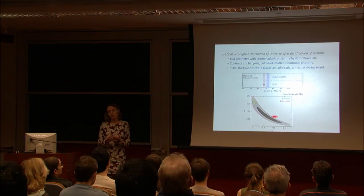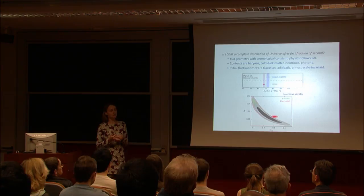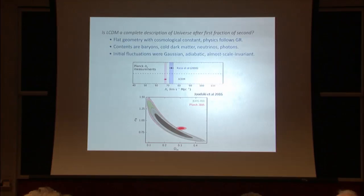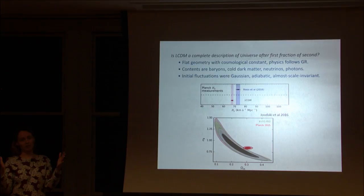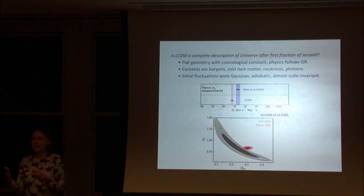I want to talk about some of the questions we're hoping to answer with better measurements of the microwave background — in particular, its polarization. The first question is whether the currently most popular model, Lambda CDM, is actually a complete description of the universe from the first fraction of a second. Is it the right thing that describes the macro properties of our universe?